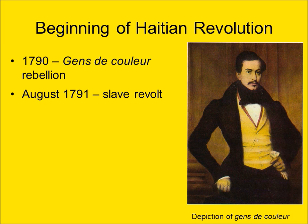The second phase, in August of 1791, was a small-scale slave revolt in the north that quickly grew into a major uprising and spread across the country. So you have these two competing revolutions happening around the same time with very different aims.